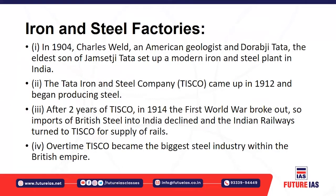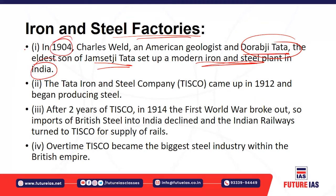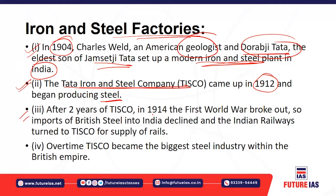Now let's understand how iron and steel factories grew again in the 20th century. Dorabji Tata, the eldest son of Jamshedji Tata, along with American geologist Charles Weld, set up a modern iron and steel plant in India in 1904. After that, in 1912, the TISCO — Tata Iron and Steel Company — came up and started producing the finest grade of steel.